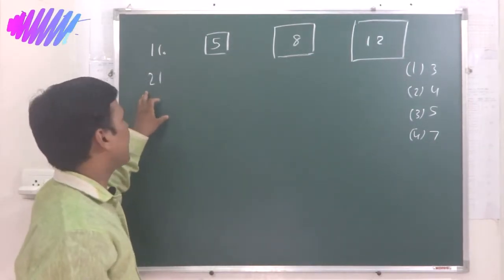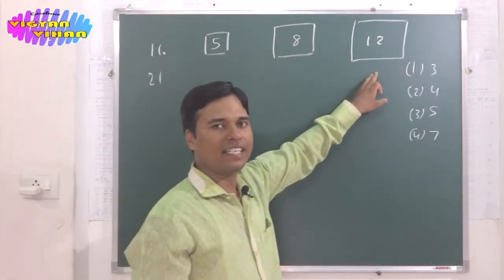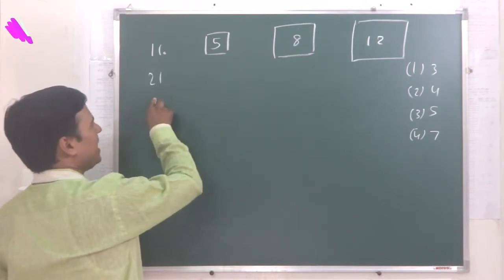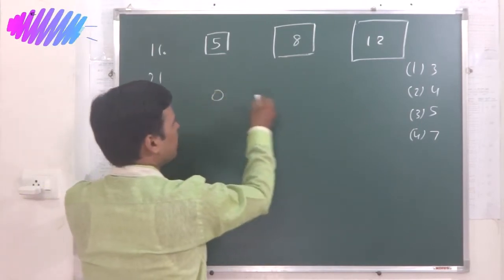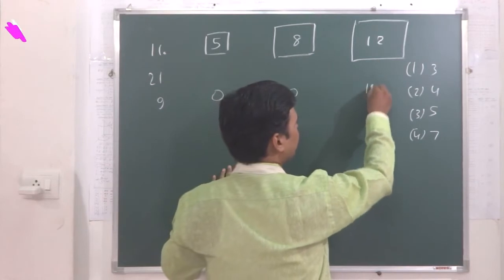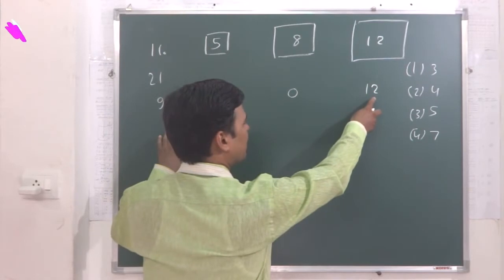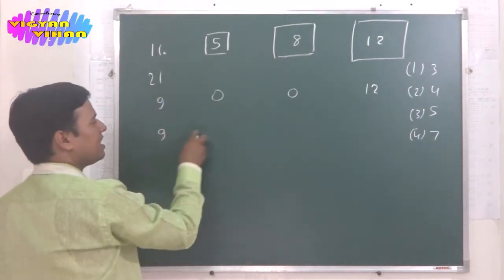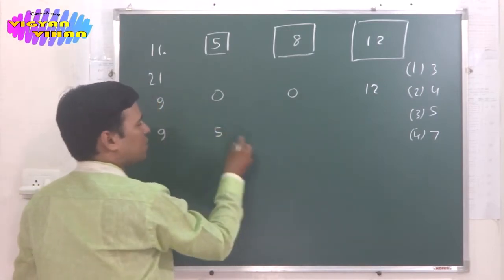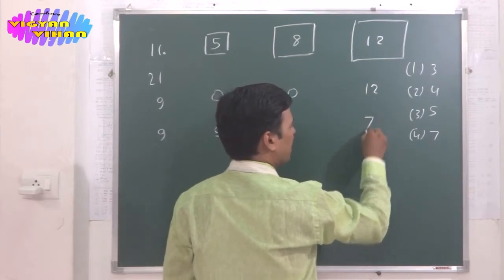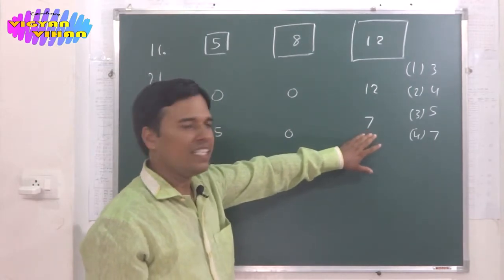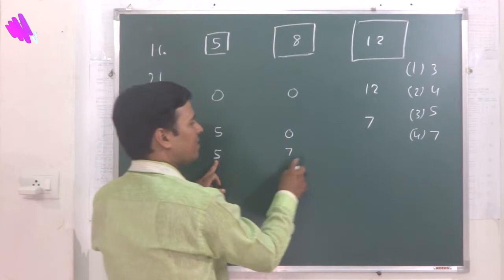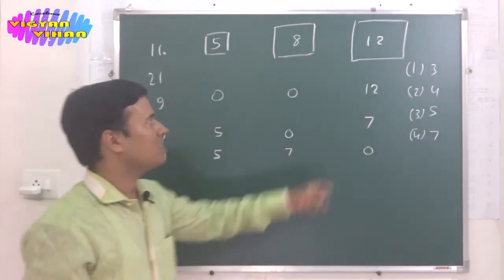In the first step, we transfer 12 liters of water into the 12-liter container, leaving 9 liters in the main tank; the 5L and 8L containers remain at 0. In the second step, we transfer 5 liters from the 12-liter container into the 5-liter container, leaving 9L in the main tank, 5L in the 5L can, and 7L remaining in the 12L can. In the third step, we transfer that 7 liters into the 8-liter container, so the 12L can is now empty.